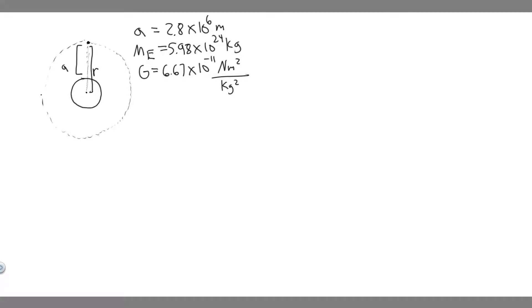In this problem, we're told a satellite is in circular orbit around the Earth at an altitude of 2.8 times 10 to the 6 meters. Find A, the period of the orbit; B, the speed of the satellite; and C, the acceleration of the satellite.